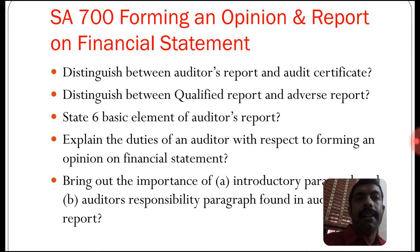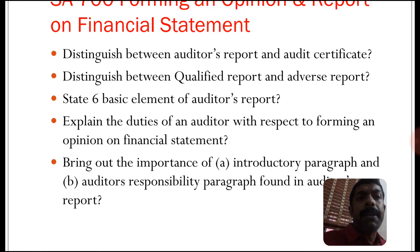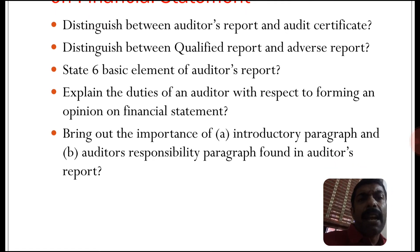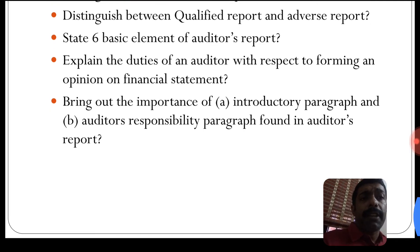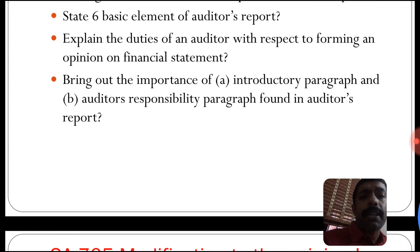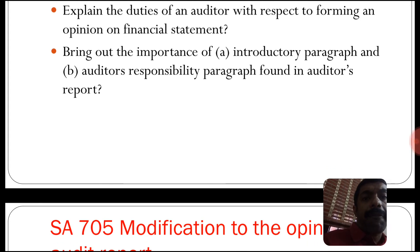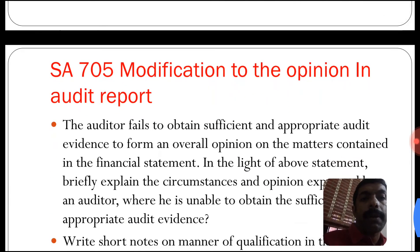Let us now discuss the 700 series. SA 700 covers forming an opinion and reporting on financial statements. Topics include: distinguishing between an auditor's report and audit certificate, distinguishing between a qualified report and an adverse report, stating the six basic elements of an audit report, explaining the duties of auditors with respect to forming an opinion on financial statements, and the importance of the introductory paragraph and auditor's responsibility paragraph found in the auditor's report.